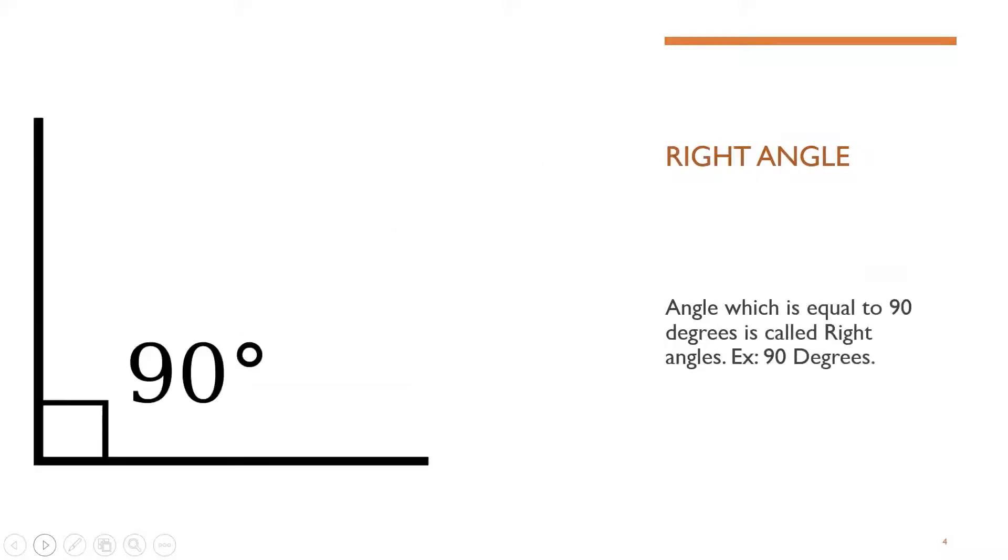They are called as acute angles. Right angles. Angle which is equal to 90 degrees is called right angle. Example 90 degrees. There is no more example of right angle except 90 degrees.